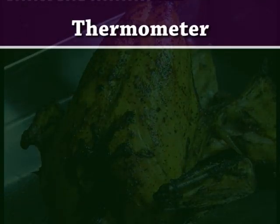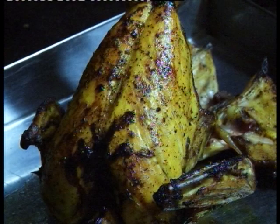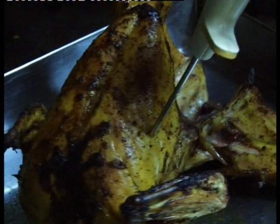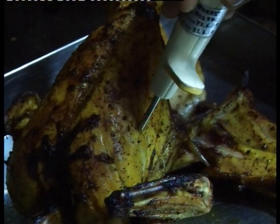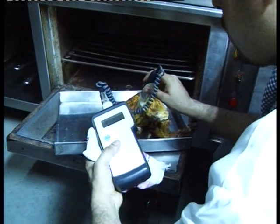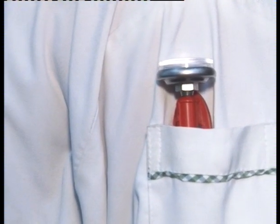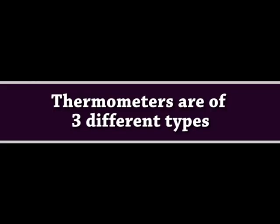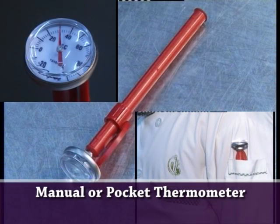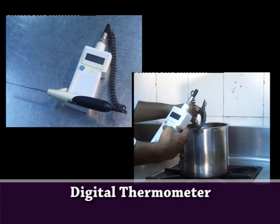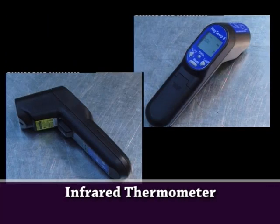Food thermometers let you check the inside temperature of food to find out if it is cooked to a safe temperature. Every food handler should have at least one pocket thermometer at all times when at work. Thermometers are of three different kinds: manual or pocket thermometer, and infrared thermometer.